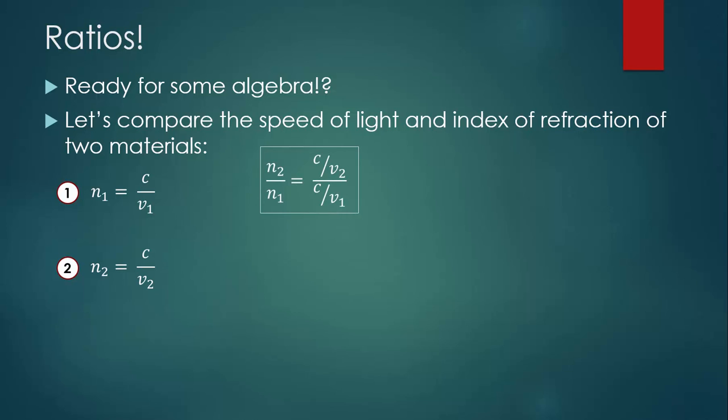Now let's turn this into a ratio of N2 over N1. All I did was take those two equations and basically divide them by each other. You can see that we're dividing by a fraction, so what we can do instead is multiply by the reciprocal.